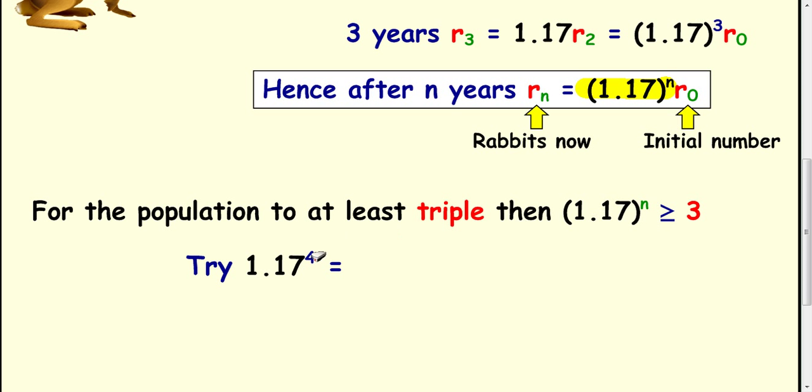You can try 4. I tried 4 first. You may have tried 2 or 6 first, but you just pick a starting point. 4 gives you 1.87 if you do 1.17 to the power of 4. Now that's smaller than 3 so we need to go higher. Let's try 5, being 5 years, and you get 2.19.